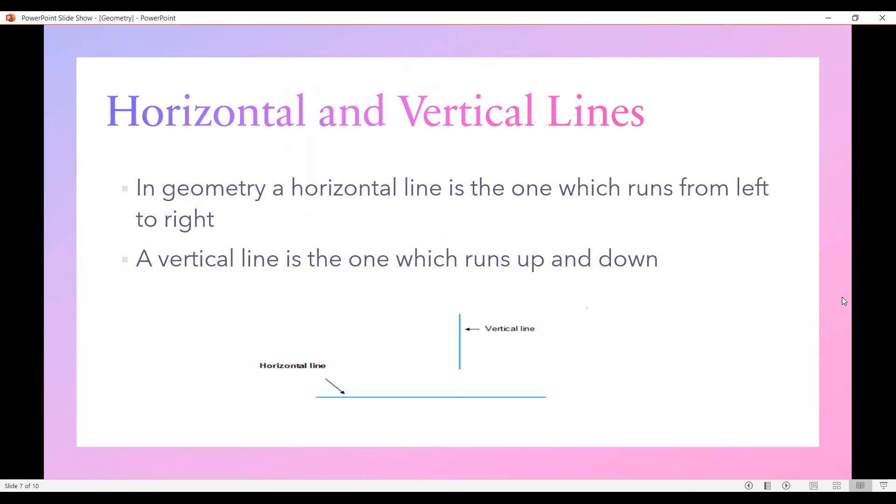Horizontal and vertical lines. A horizontal line is the one which runs from left to right. A vertical line is one which runs up and down. Like this one is a horizontal line which runs from left to right and this one is a vertical line which runs up and down.